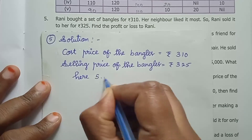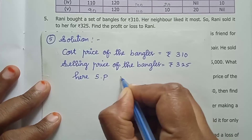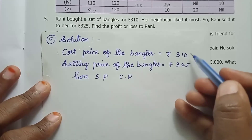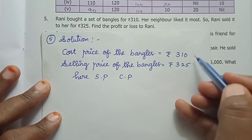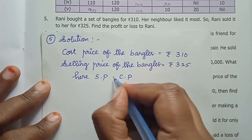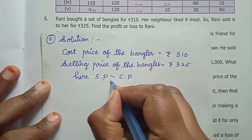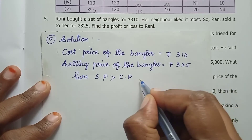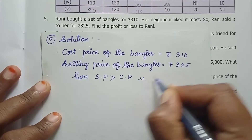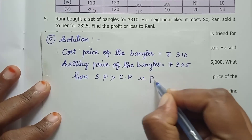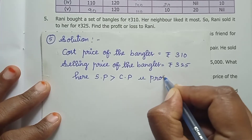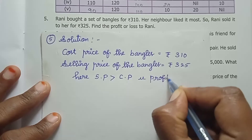Compare the selling price and cost price. When we compare the two values, the selling price is greater. So in this case, what is the result? It is profit.